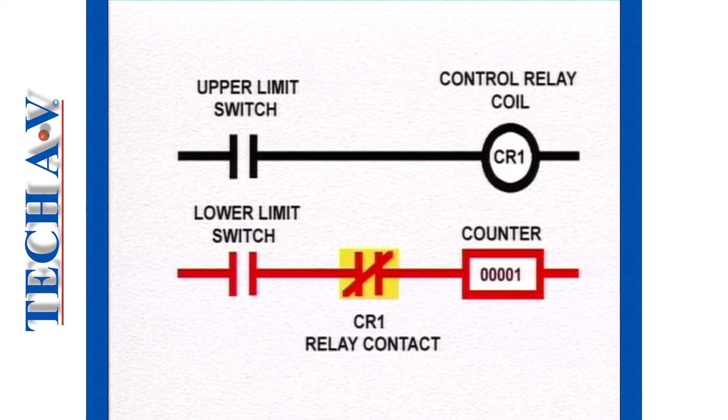Notice that the symbol for normally closed contacts is shown with a diagonal line through the center of the contact. This tells us that in the normal or inactive state, the contacts are passing power.